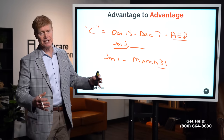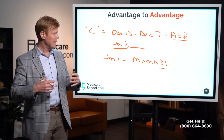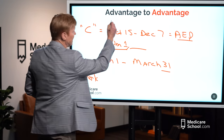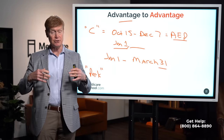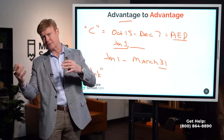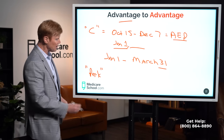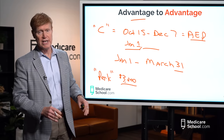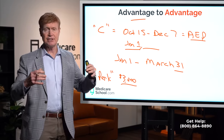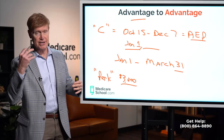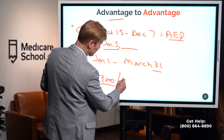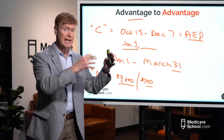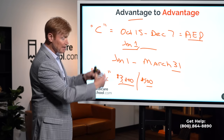A very common mistake happens when an agent reaches out and focuses on a perk within the advantage plan. For example, you may be on a plan with a $1,000 dental allowance, and the agent calls to say there's a plan with $3,000 a year. Or maybe your current plan has a hearing aid benefit with a $1,250 copay, and a new plan offers a $500 copay. Agents often highlight one or two perks to encourage you to switch.